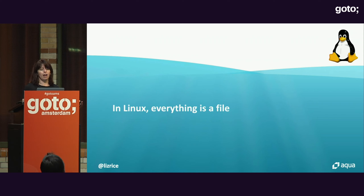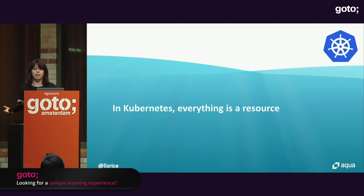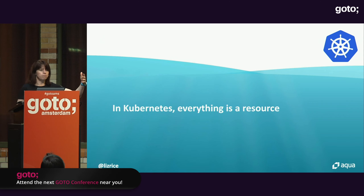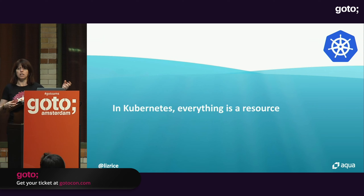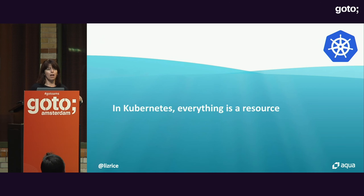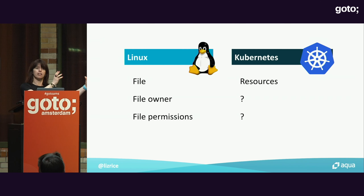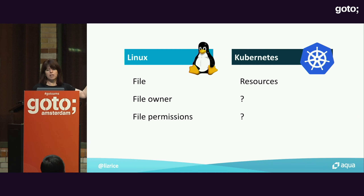In Kubernetes, we don't really have that. What we have is resources — lots of different types of objects like pods, nodes, service accounts, pod security policies, or custom resources. Everything that we deal with, every first class entity in Kubernetes, is a resource. So if everything is a file in Linux and everything is a resource in Kubernetes, we can say they're kind of equivalent.